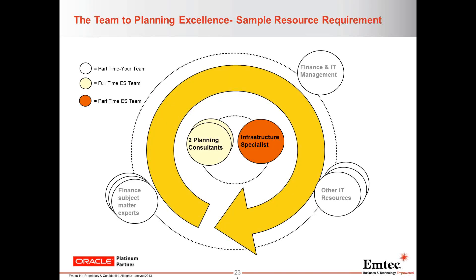In terms of resources, typically you will have two planning consultants on staff with an infrastructure specialist — the infrastructure specialist being part-time. The planning consultant can be on-site or off-site if necessary. Depending on the application, it could be three consultants or it could be one. On the client side, we always want support from finance and IT management, financial subject matter experts — an FP&A department is great at getting everything together, but sometimes they don't know exactly how different business units derive revenue. And of course, IT resources to get data from external systems.